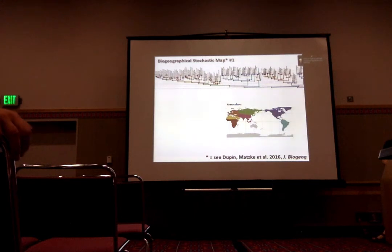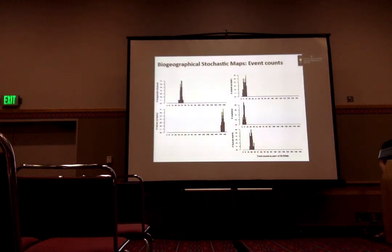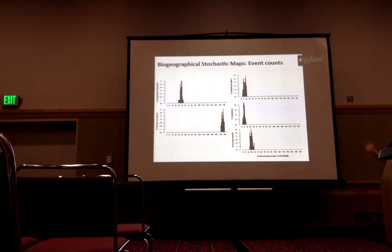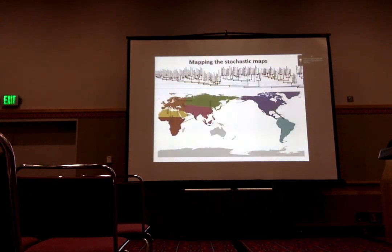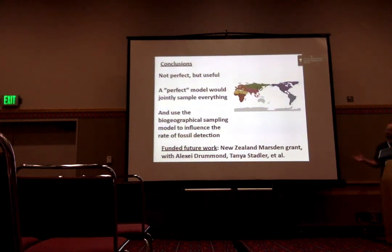Here's an example of a few histories. You can see that a lot of things don't change, but some parts of the biogeography do change. This is just a part of the tree since it's quite large and hard to display. With biogeographic stochastic mapping, we can count events — jump events, range expansion events, and other kinds — giving a sense of uncertainty. You can also map the stochastic map onto an actual geographic map to get a sense of how many dispersals there have been between regions back and forth.